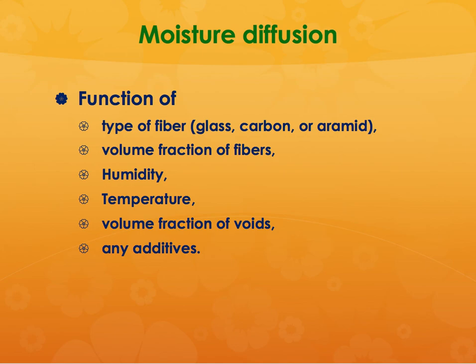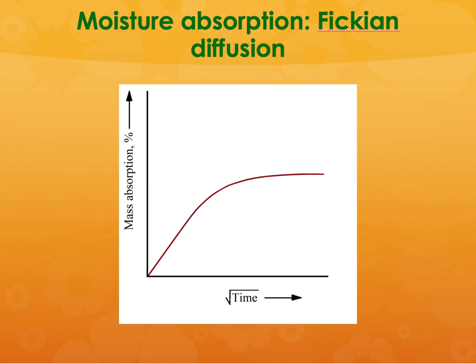Moisture diffusion is a function of the type of fiber, volume fraction of fibers, humidity, temperature, volume fraction of voids, and any additives that might attract moisture into the composite. It is typically a Fickian diffusion process — as a function of the square root of time, it goes up and then levels off. The moisture content can be as much as 6–7% or as low as 1%, and it can affect the properties of the composite material.